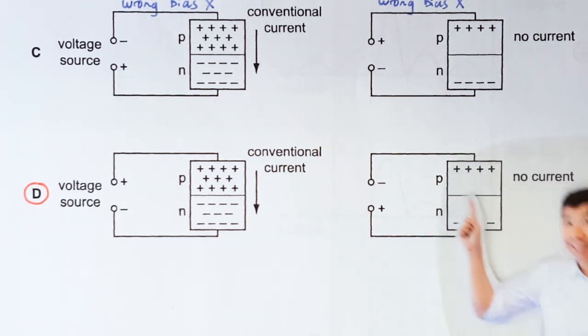So take note, the positive and negative signs in this question are meant to represent the holes and the electrons. They are not representing the bound ions, which is what is shown in many textbooks.